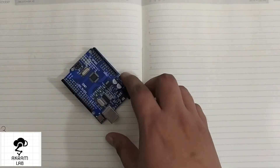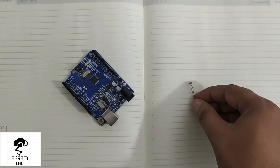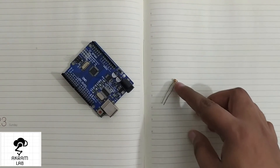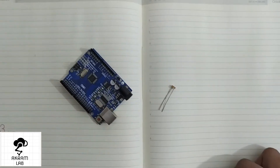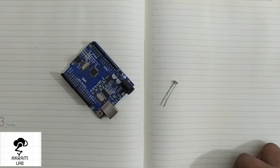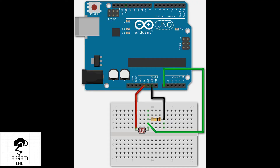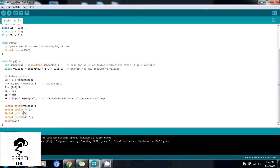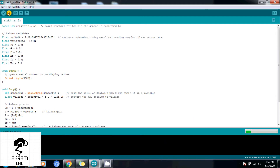I am going to use the Arduino Uno and the LDR, and I will be needing one resistor to complete the circuit. This is the circuit I will be using to connect the LDR with the Arduino Uno. Now let's program the Arduino Uno with the Kalman filter.